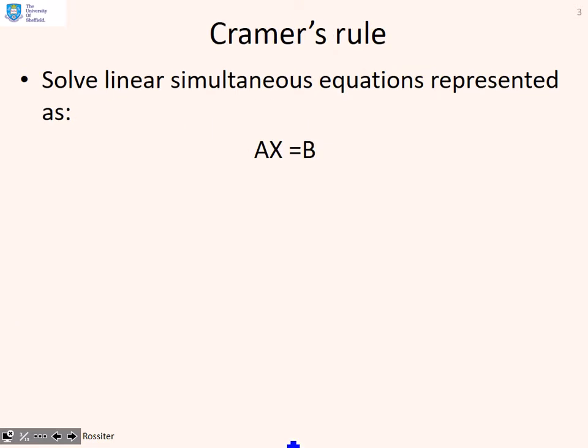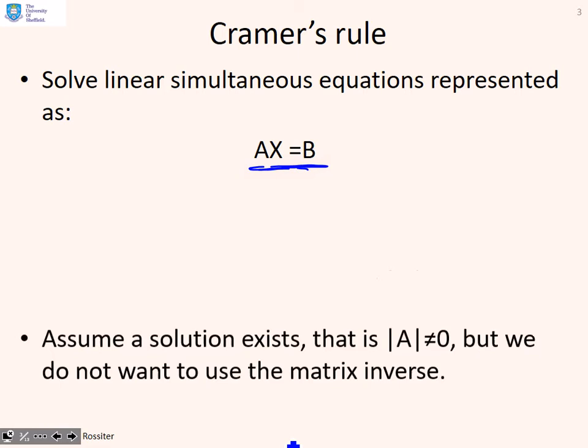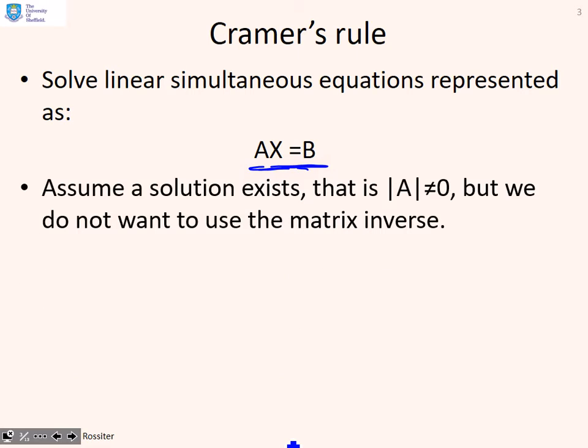Let's remind ourselves of the basics. We want to solve linear simultaneous equations represented in matrix form AX = B. We're going to assume a solution exists, that is |A| ≠ 0, but we don't want to use the matrix inverse because finding A inverse is tedious.